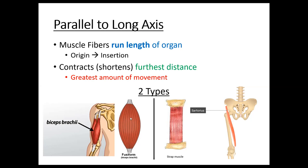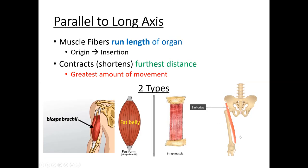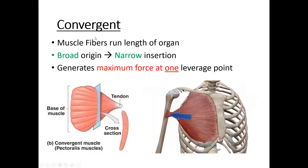There are two subtypes of parallel fascicle arrangement. Fusiform means the muscle has a fat belly — it's fatter in the middle and tapers at the ends, like the biceps brachii. The other subtype is the strap muscle, which has the same width all the way through. For example, the sartorius muscle runs from the iliac crest to the inside of the tibial tuberosity and is one of your hip flexors, allowing a great range of movement.